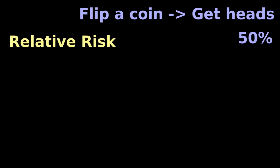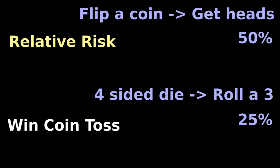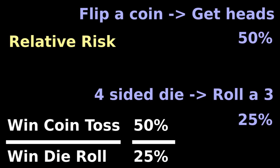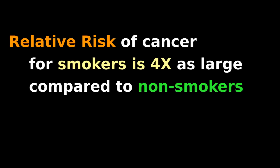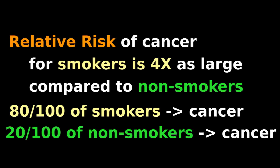Relative risk is comparing one risk relative to another risk. The relative risk of winning a coin toss compared to rolling a die is 50% to 25%, or two. So when you say the relative risk of getting cancer for smokers is four times as large compared to non-smokers, you mean that 80 out of 100 smokers will get cancer compared to 20 out of 100 non-smokers.